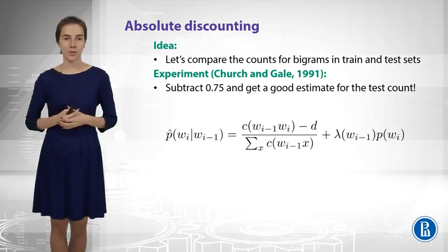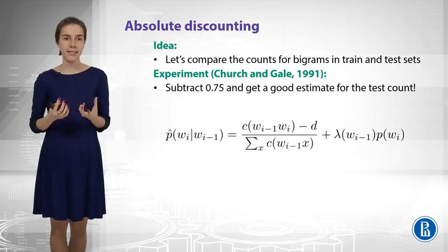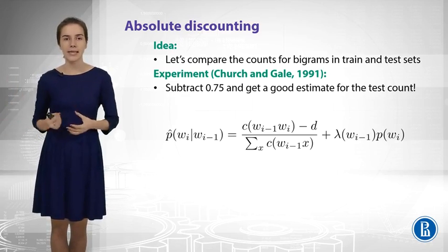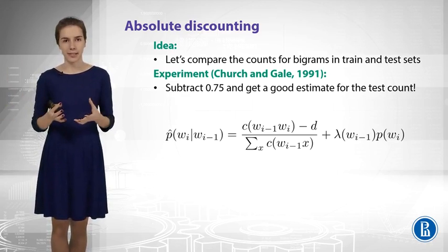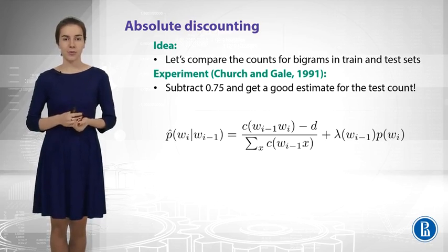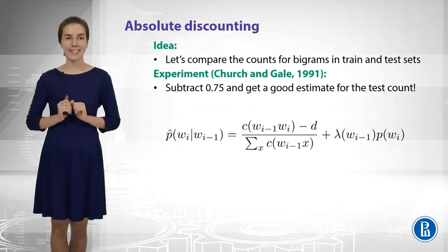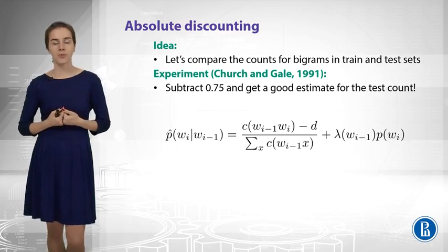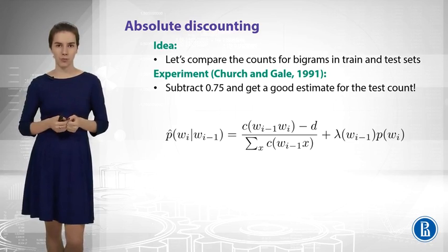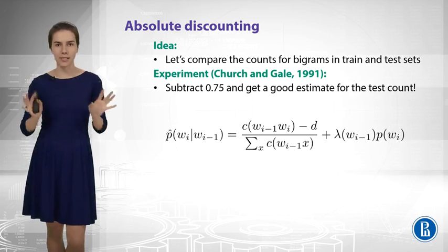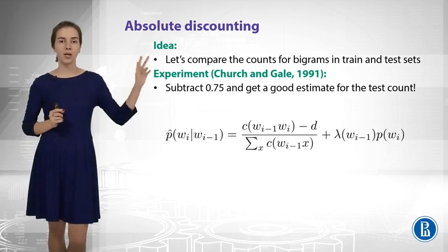The way that we use it is: let us subtract this d, which is 0.75 or maybe tuned using some test data, from our counts to model the probability of our frequent n-grams. This is how we pull the mass, and 0.75 is the extent of pulling. Now, to give the probability to infrequent terms, we use the unigram distribution. On the right-hand side you see some weight that makes sure the normalization is fine, and the unigram distribution.